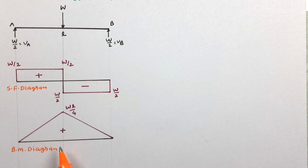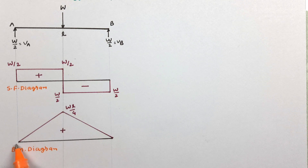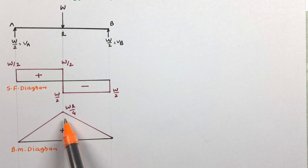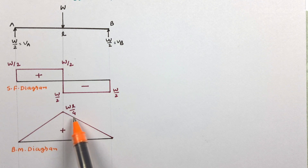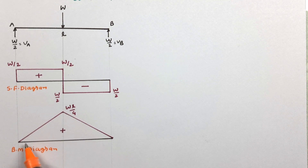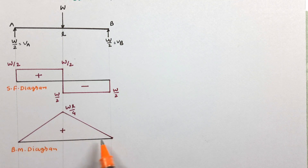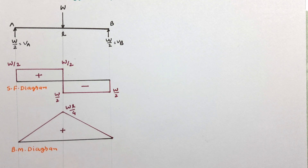This diagram, which shows the variation of shear force across the section of the beam, is called the shear force diagram. In the next figure, the variation of bending moment is shown. At the ends, the bending moment is zero, and it continuously increases. At the center of the beam, it reaches a maximum value of WL/4. This diagram, which shows the variation of bending moment along the length of the beam, is called the bending moment diagram.